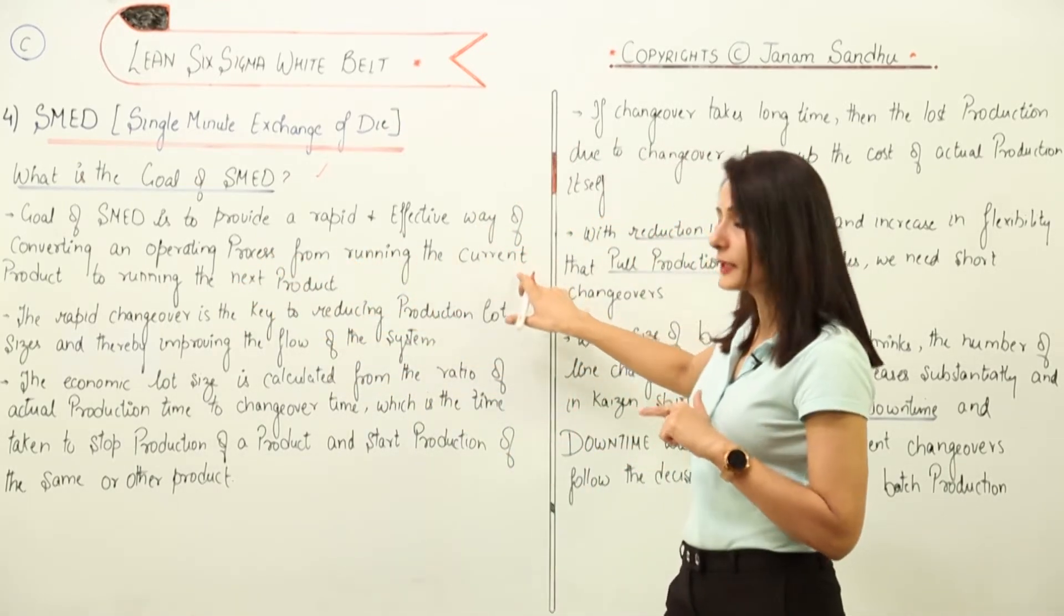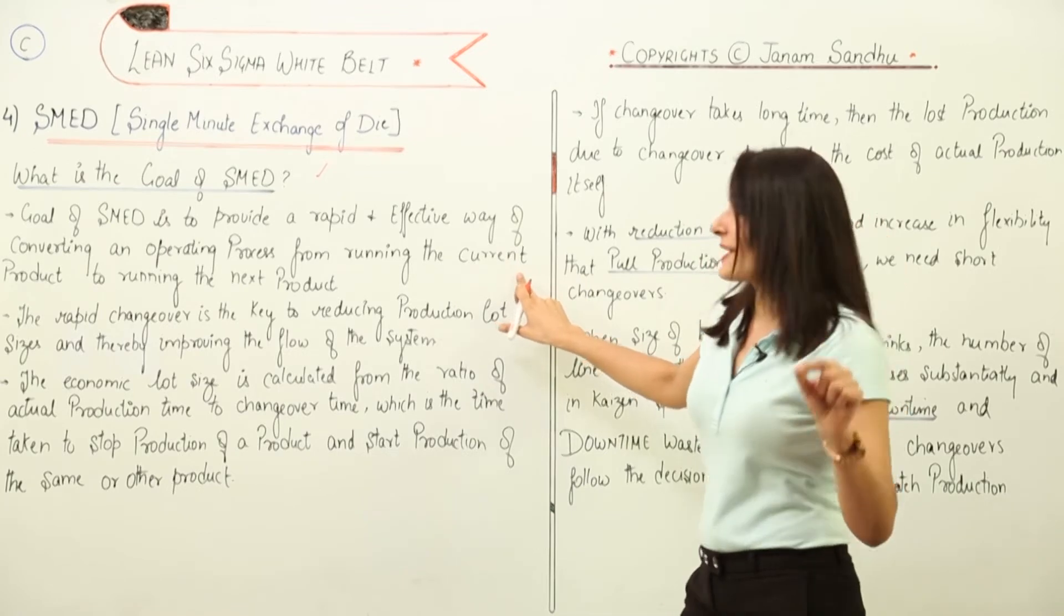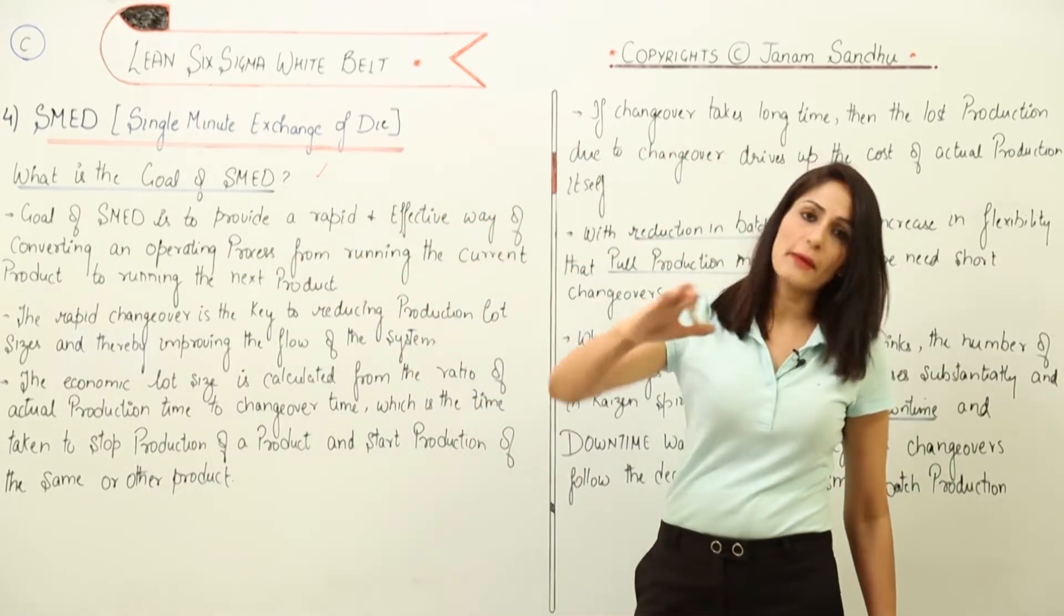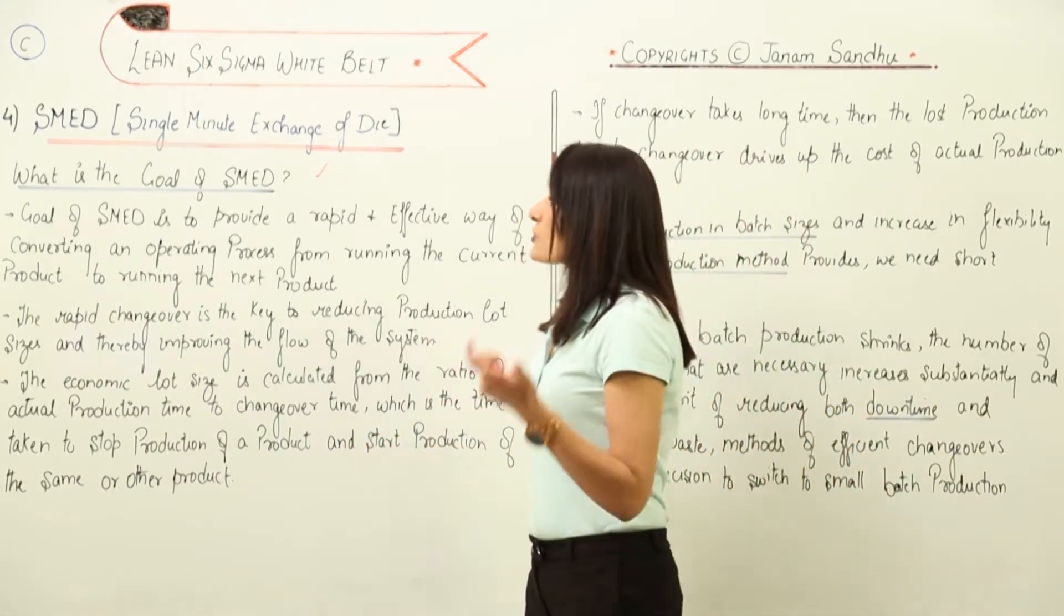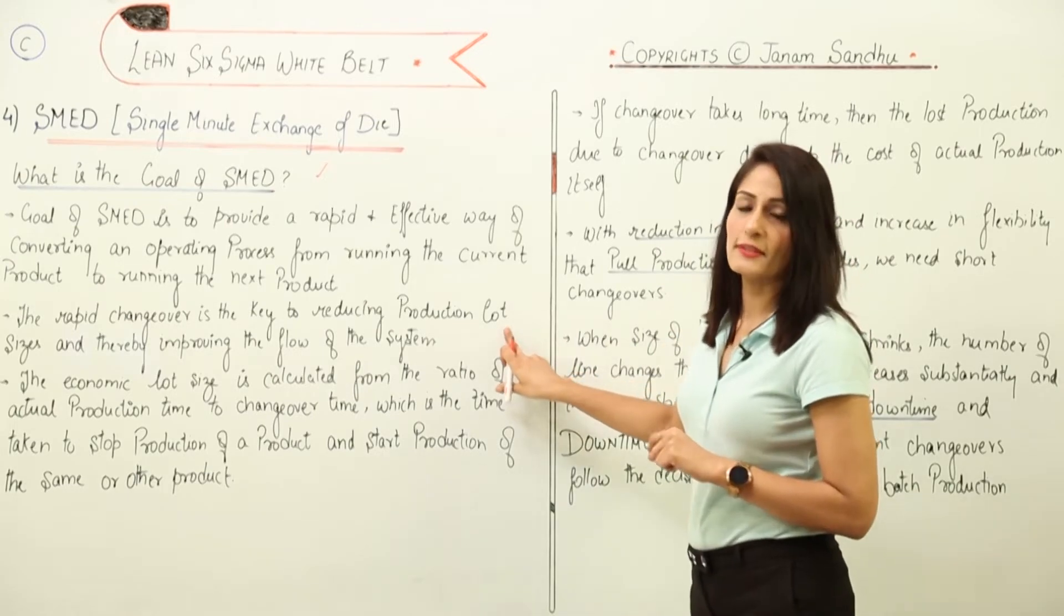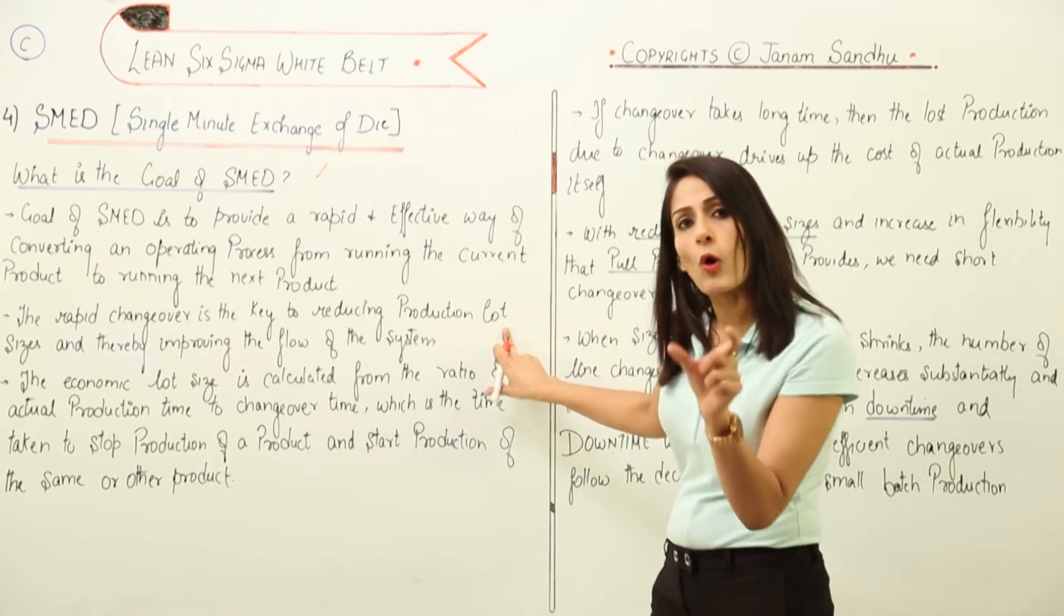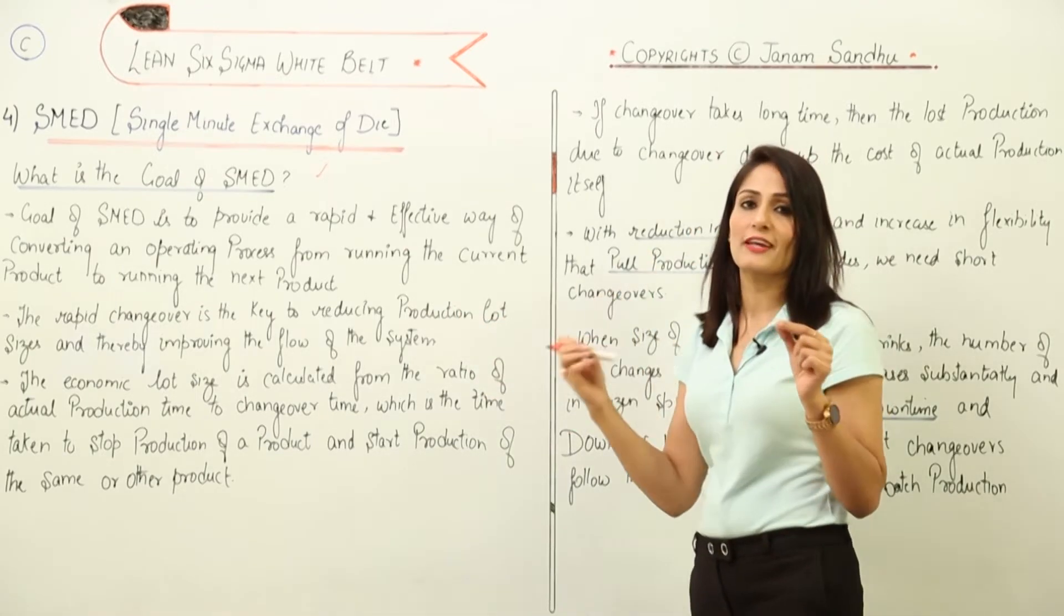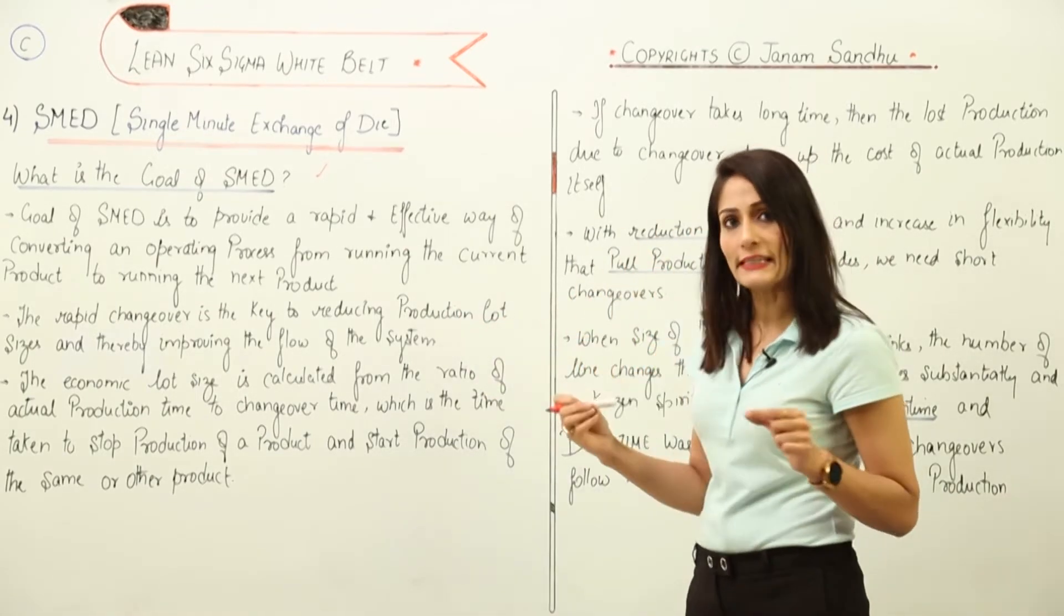The goal of SMED is to provide a rapid and effective way of converting an operating process from running the current product or process to running the next product or process. It can be the same or a different product. Rapid changeover is the key to reducing production lot sizes.